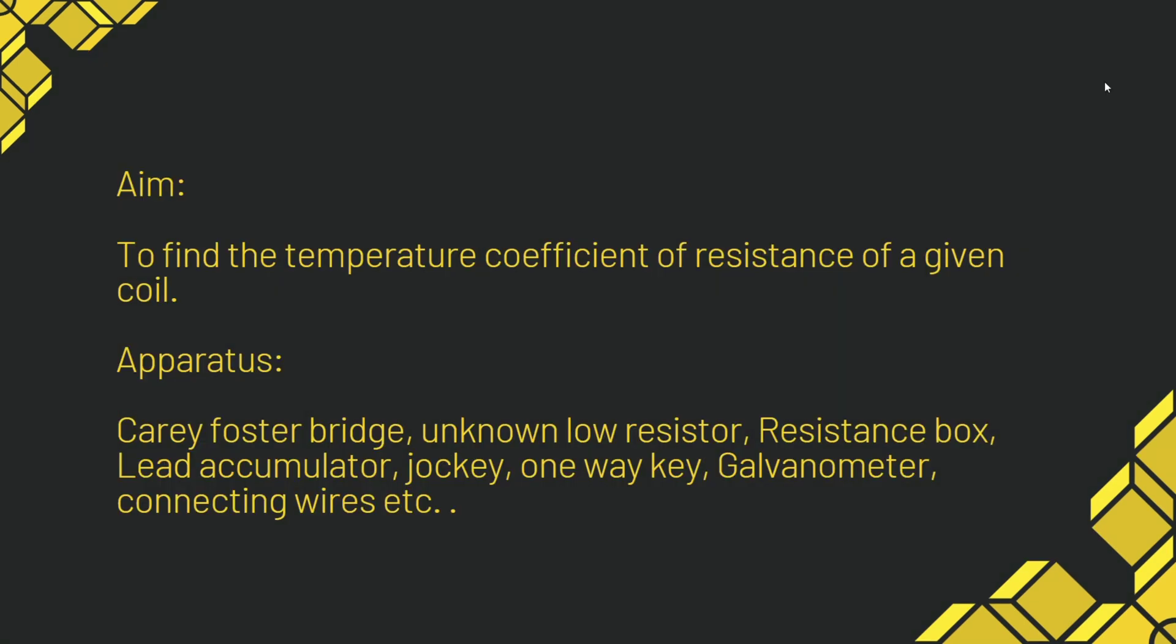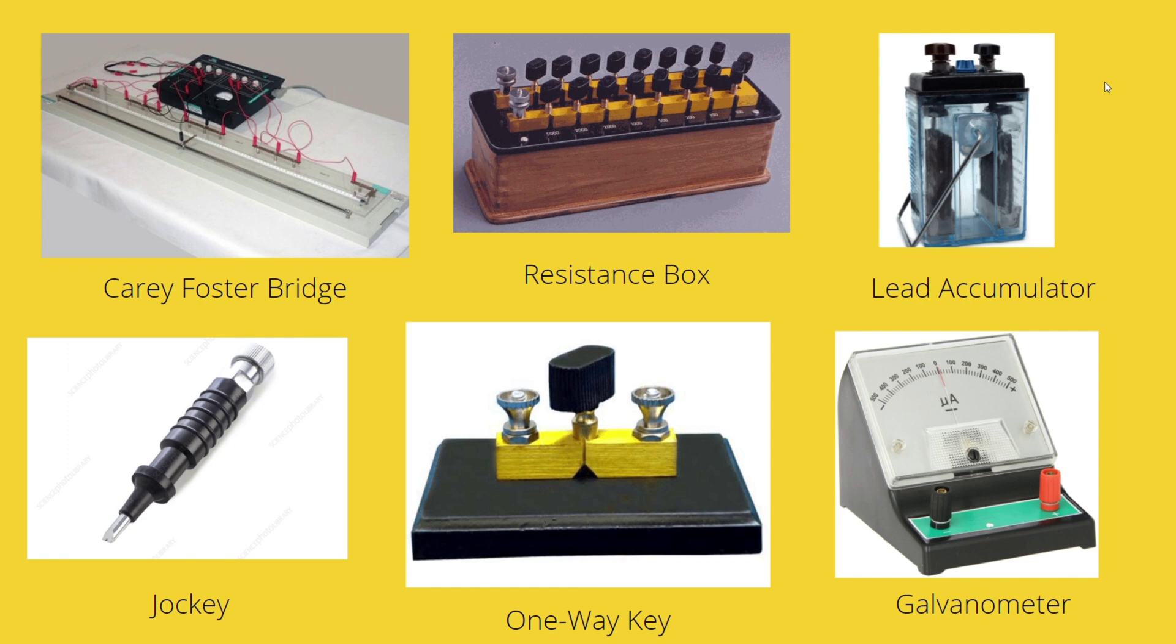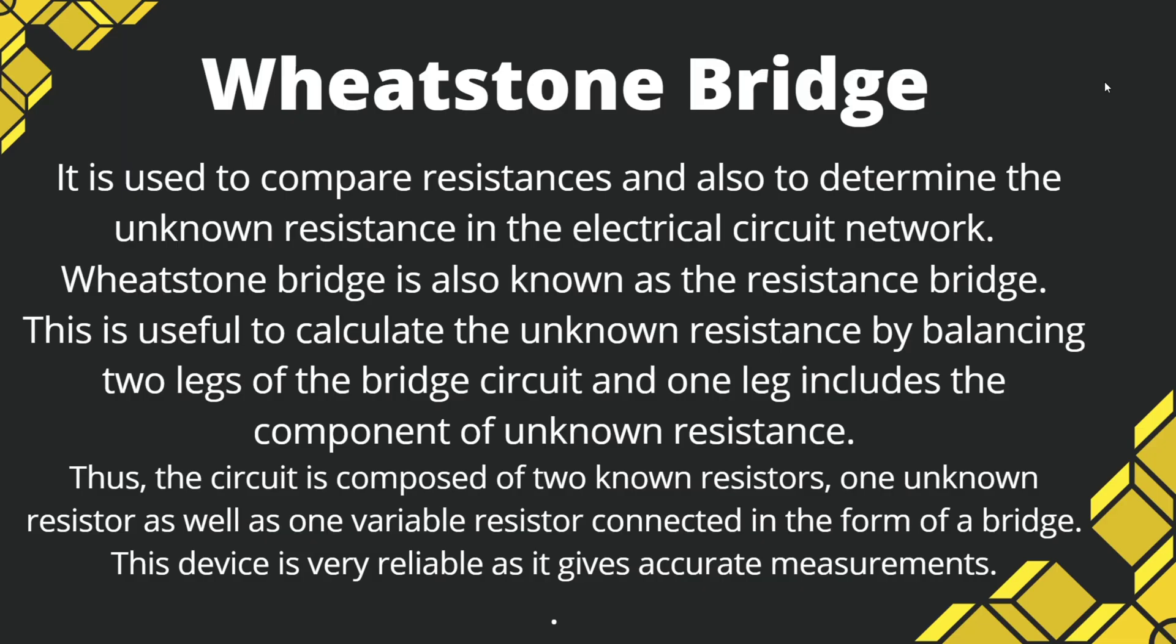Aim: to find the temperature coefficient of resistance of a given coil. Apparatus: Carrier foster bridge, resistance box, lead accumulator, jockey, one-way key, galvanometer, and connecting wires.